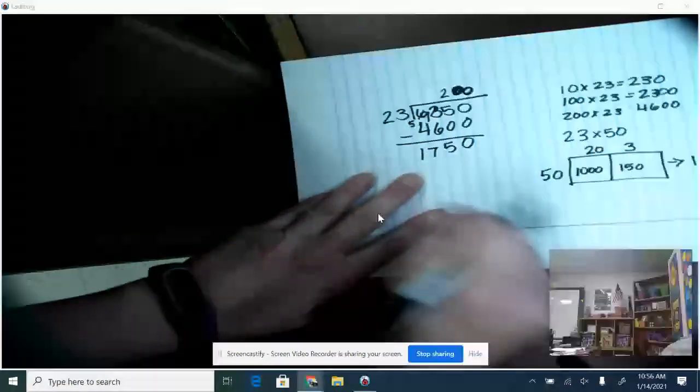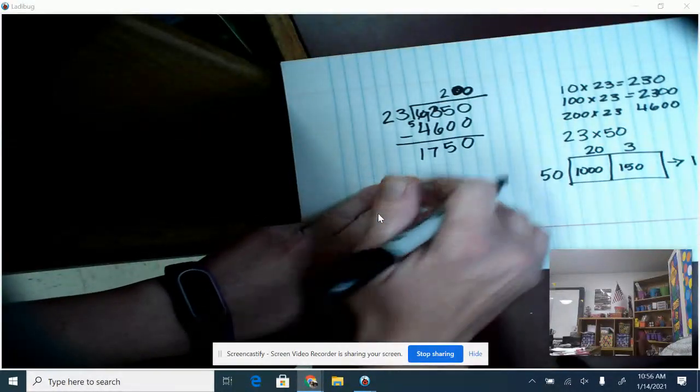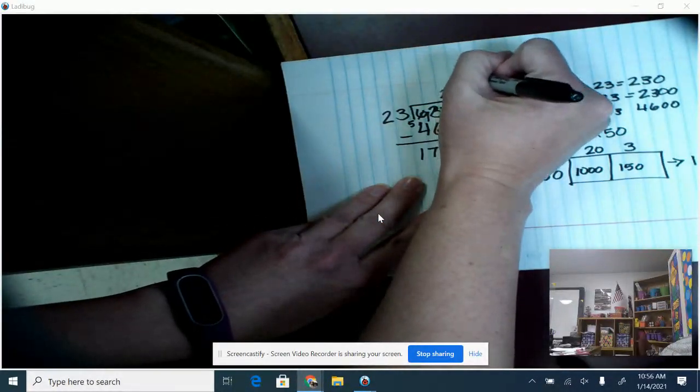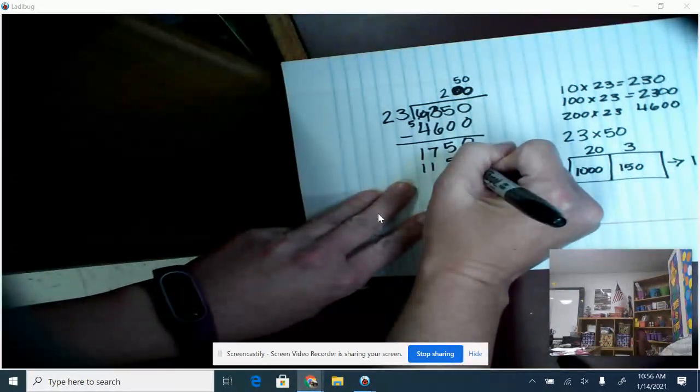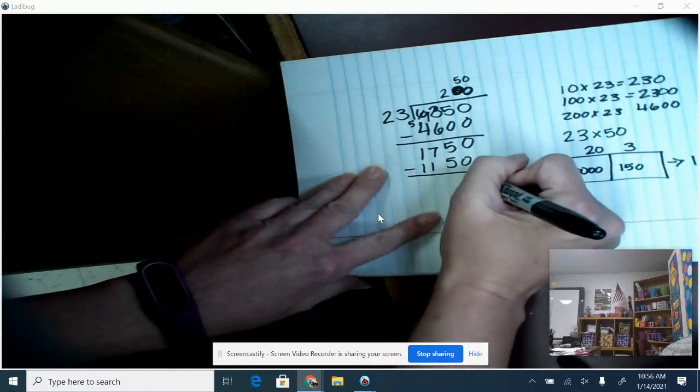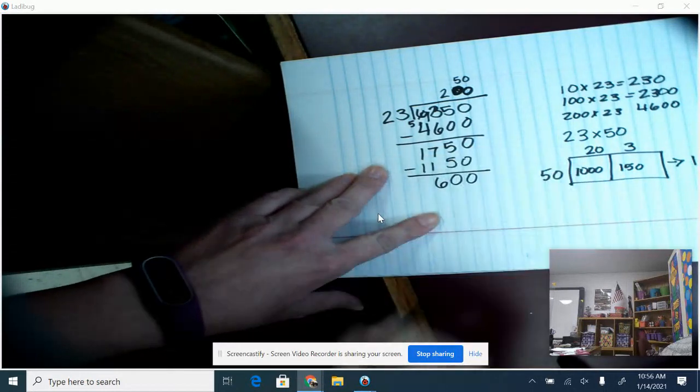So that's going to take away some more, and it didn't go over, so we're still doing good. We have a few more steps to do, but we're making the number smaller as we go. So now we've got 600.